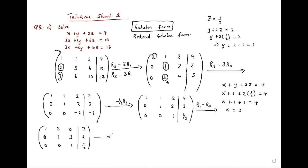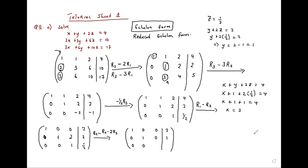Then the last step is going to row 2 and saying: row 2 minus 2 times row 3. This gives: 1, 0, 0, 2. Then 0, 1, 2 minus 2 = 0, 2 minus 1 = 1. And then 0, 0, 1, half.